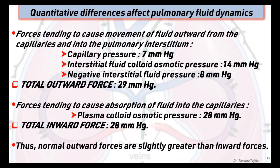The forces tending to cause movement of fluid outward from the capillaries into the pulmonary interstitial space are: capillary pressure of 7 mmHg, interstitial fluid colloid osmotic pressure of 14 mmHg, and negative interstitial fluid pressure of about 8 mmHg, giving a total outward force of about 29 mmHg.